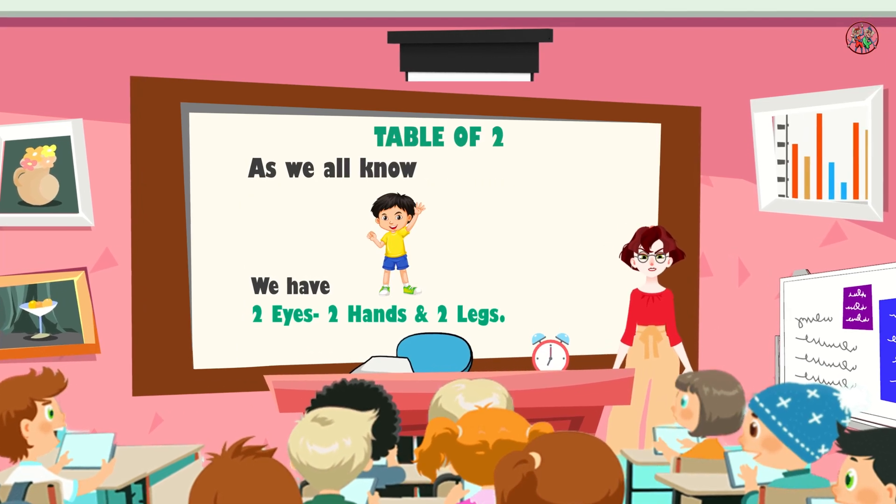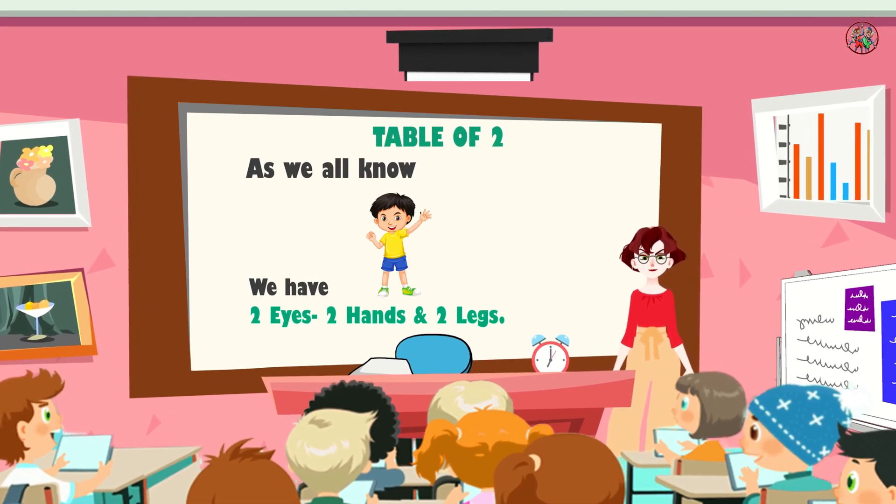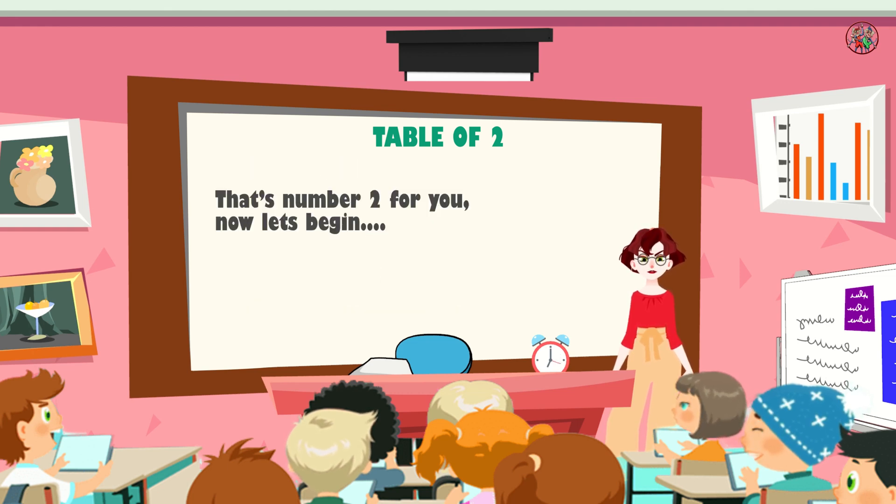As we all know, we have two eyes, two hands and two legs. That's the number two for you. Now, let's learn the table of two.